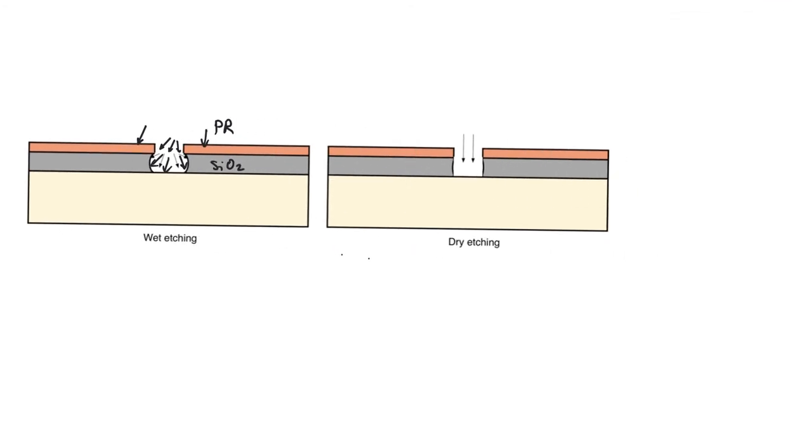Dry etching on the other hand uses gases in the plasma phase to do the etching. We use high energy gases, plasmas or ions to eat away at the material. Dry etching has a few advantages. First of all it's more directional than wet etching so it can create better features. Secondly it doesn't leave any fluid on the wafer. It's a gas so it's clean. It doesn't require washing after or anything like that.